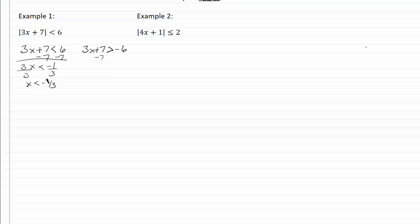Solving our other equation, add a negative seven and we get three x is greater than negative thirteen, divide by three and x is greater than negative thirteen-thirds.